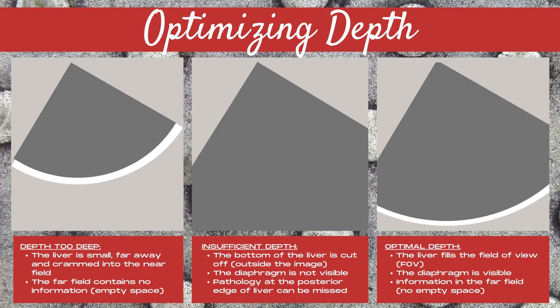The last image to the far right displays the optimal depth. The liver fits into and also fills the field of view. The diaphragm is clearly visible along the posterior margin of the liver, and there's information in the far field — meaning there's no empty or dead space. Because the liver fills up the entire image, this space contains information, or contains the area of interest within it. And that is what we're striving for on an ultrasound image.